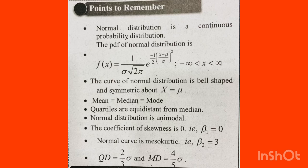Normal distribution is unimodal — there is only one mode value. The coefficient of skewness beta1 is equal to 0, meaning skewness is 0. The normal curve is mesokurtic, with beta2 equal to 3.